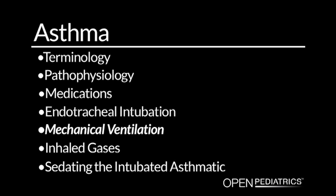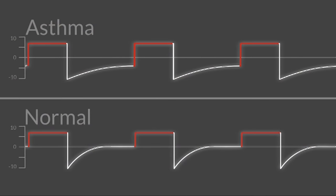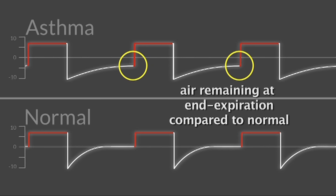Mechanical ventilation. Most patients with asthma have dynamic pulmonary hyperinflation, or gas trapping. In asthmatic lungs, there is a fair amount of end-expiratory air remaining in the lungs, leading to air stacking — every subsequent breath stacks on the previous one since the lungs are not emptied — and over time this leads to air trapping or autoPEEP.